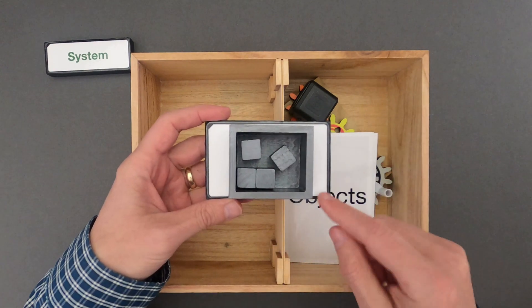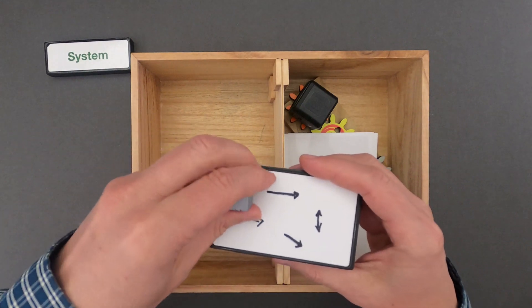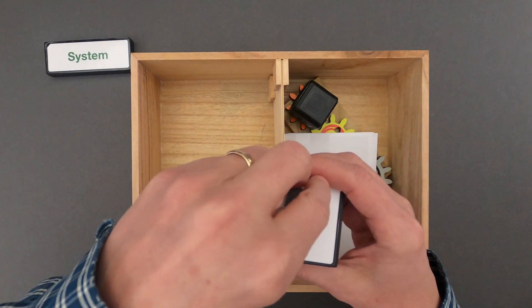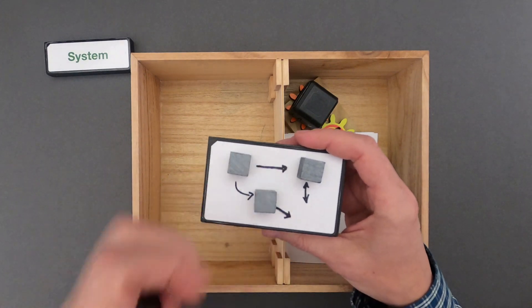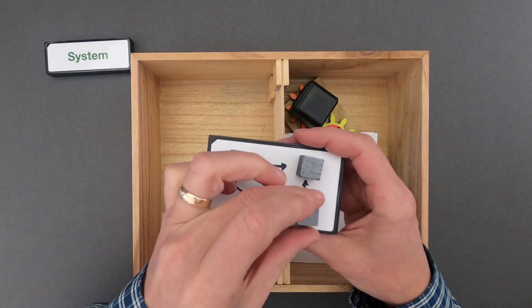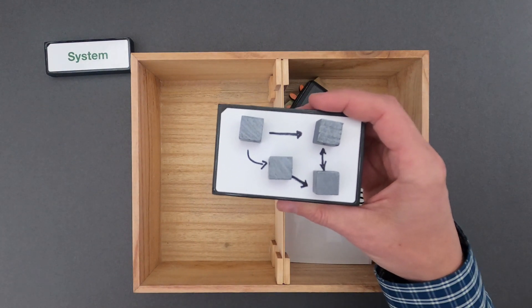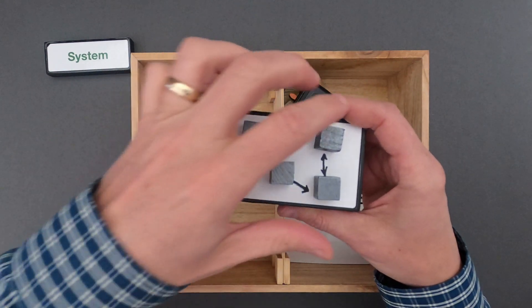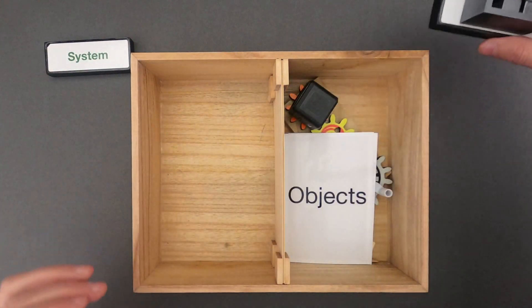Remember, a system is defined by the boundary, but it's also defined by all the parts. Now as we dig into systems in this video, what we're going to be concerned with is not only the components of the system, but those arrows that are connecting those components in the system, because those are the interactions. And those define the system just as much as the components do.